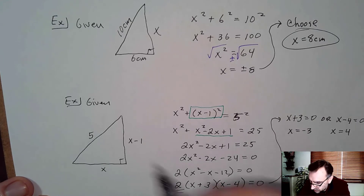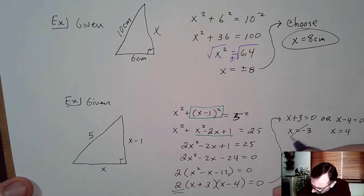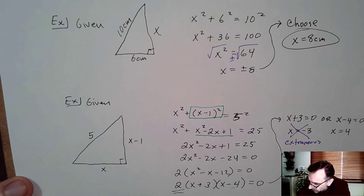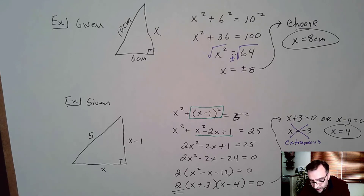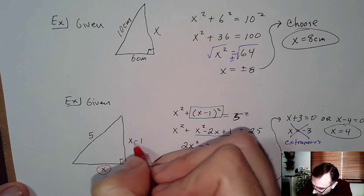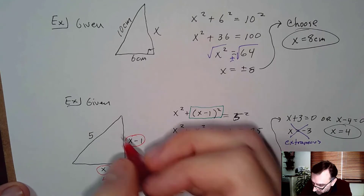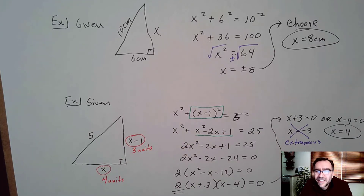Since we're doing geometry, it doesn't make sense for a side of a triangle to be negative, so we discard x equals negative 3 as extraneous. We choose x equals 4. Plugging back in: this side is 4 units, and x minus 1 is 3 units. This is just the 3-4-5 right triangle in disguise.